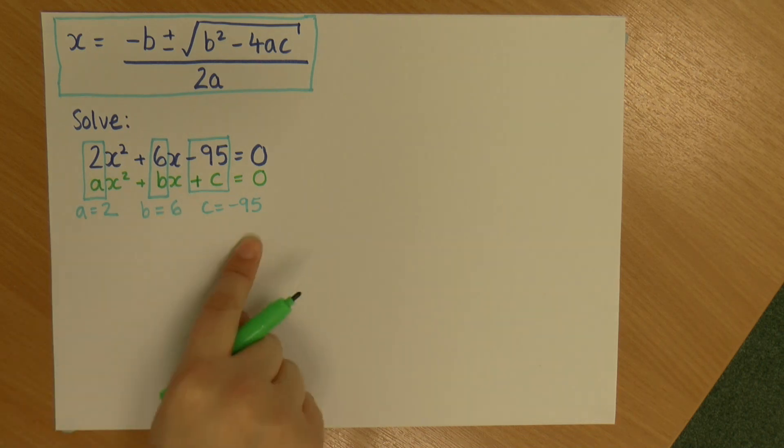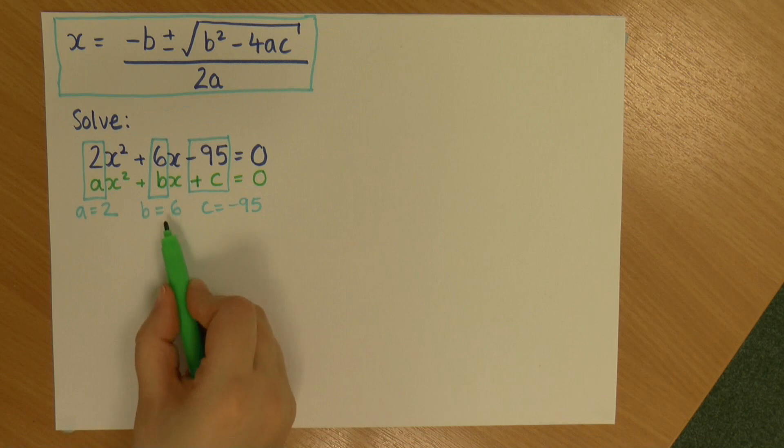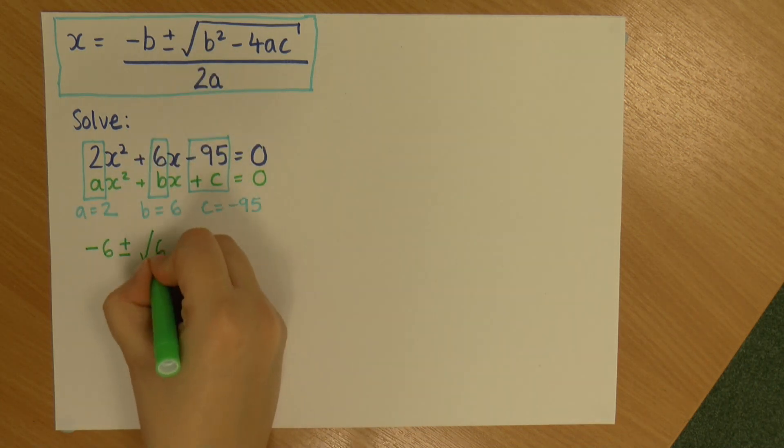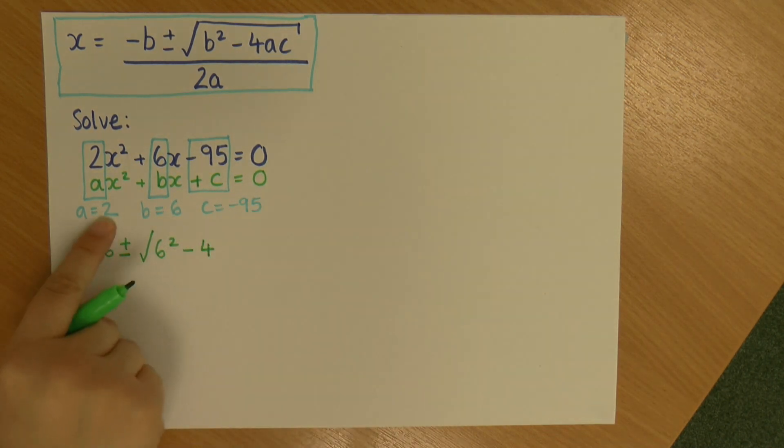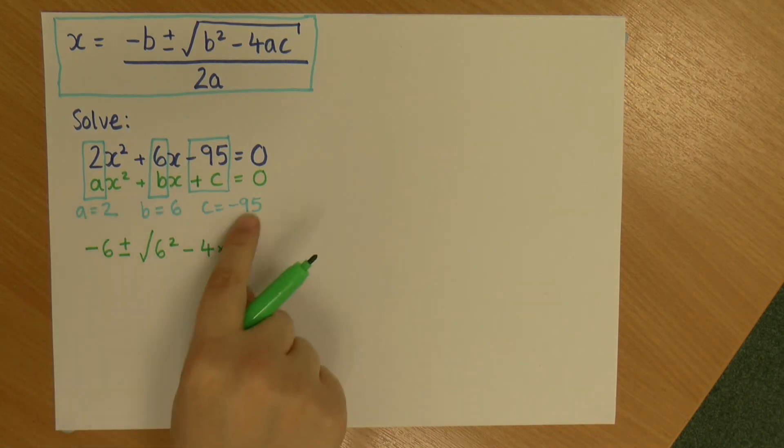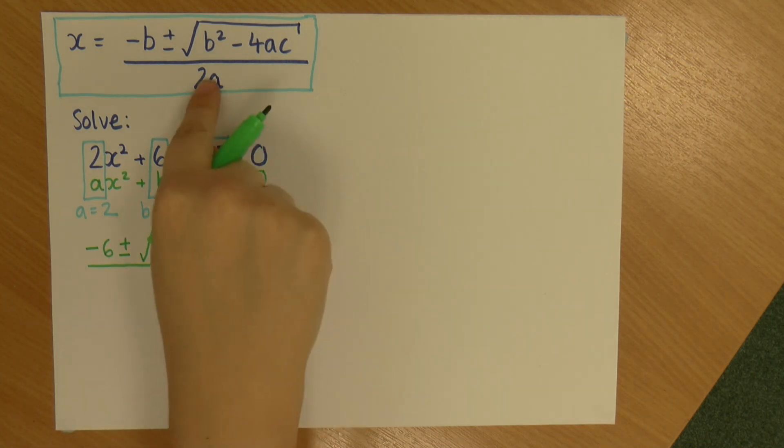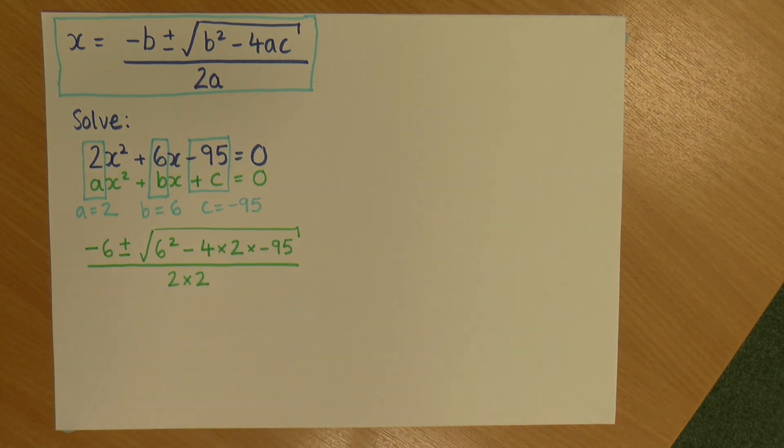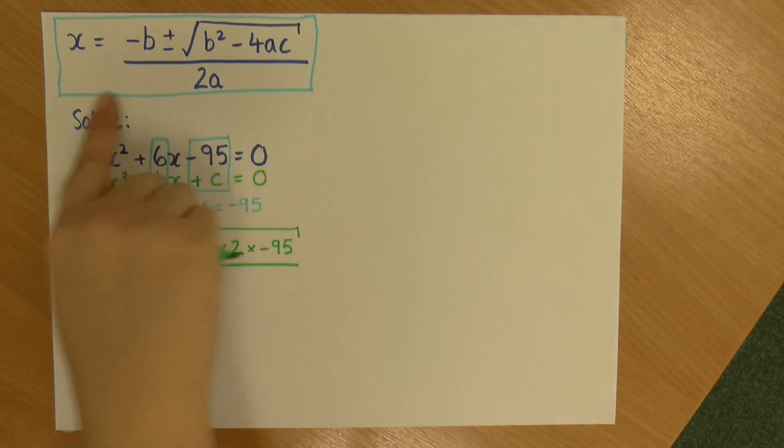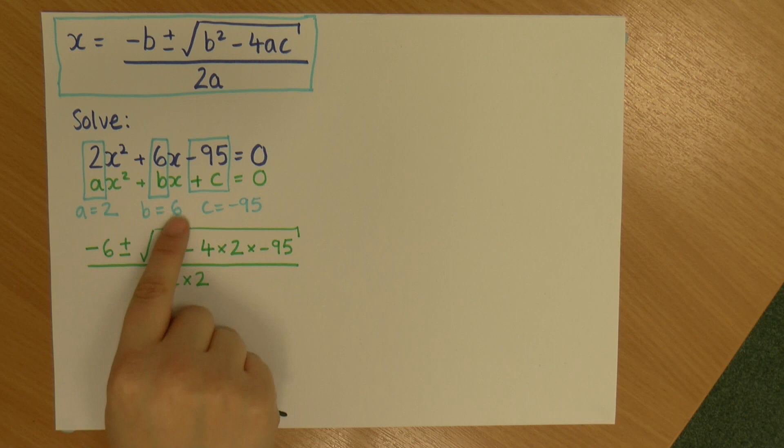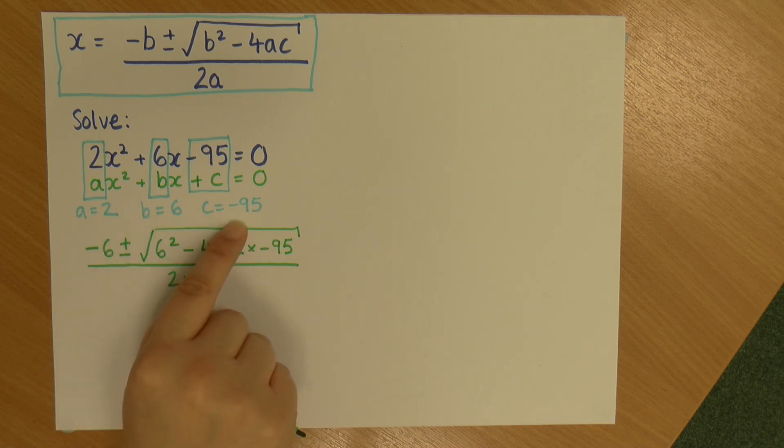And I can now plug these a's, b's and c's into this formula here. So b is 6, so minus 6 plus or minus the square root of b squared, so 6 squared minus 4 times a which is 2 times c which is minus 95, all over 2 times a, so 2 times 2. There we go. So we've got a really ugly looking equation, but we're going to simplify this now. What I have done is I have just rewritten out the quadratic formula, replacing each of the letters with its number. And I always write these out when I'm solving quadratic equations using the formula.